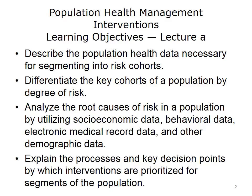The learning objectives for Lecture A are to: 1. Describe the population health data necessary for segmenting the population into risk cohorts. 2. Differentiate the key cohorts of a population by the degree of risk. 3. Analyze the root causes of risk in a population by utilizing certain socioeconomic, behavioral, electronic medical record data, and other demographic data. 4. Explain the processes and key decision points by which interventions are prioritized for segments of the population.